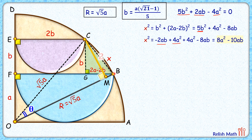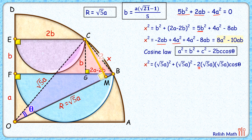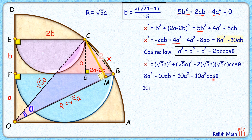Now that we have x², let's apply the cosine law in triangle OBC. The cosine law states a² = b² + c² − 2bc·cos θ, where a, b, c are side lengths and θ is the angle between sides b and c. Here we set x² = (√5·a)² + (√5·a)² − 2·(√5·a)·(√5·a)·cos θ. Substituting x² = 8a² − 10ab and simplifying: 8a² − 10ab = 10a² − 10a²·cos θ.